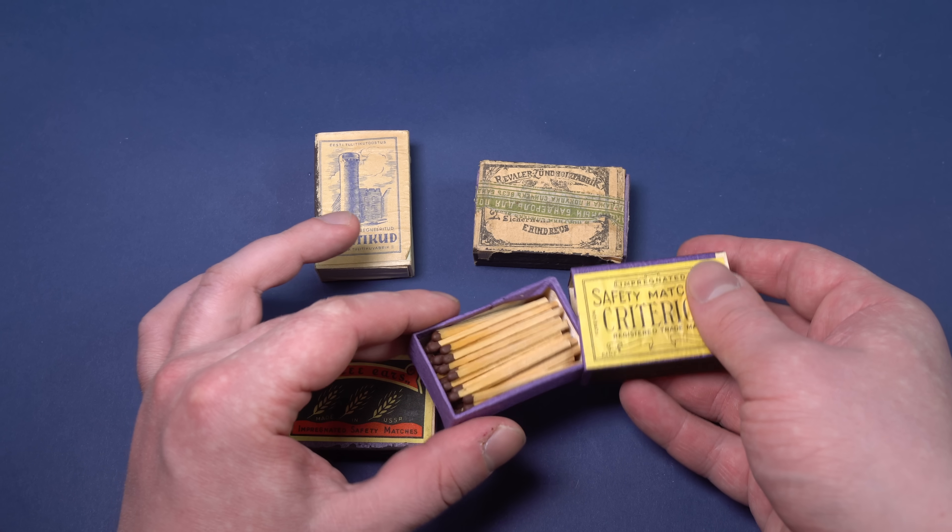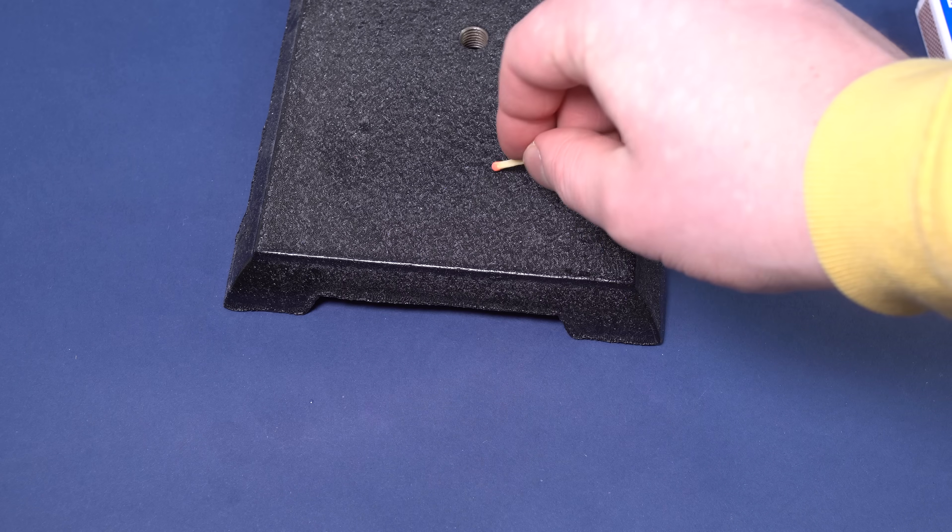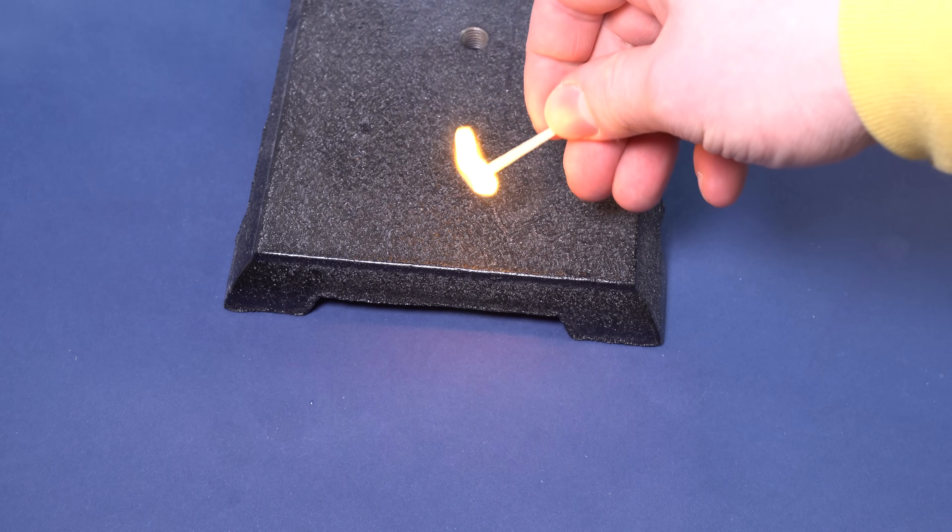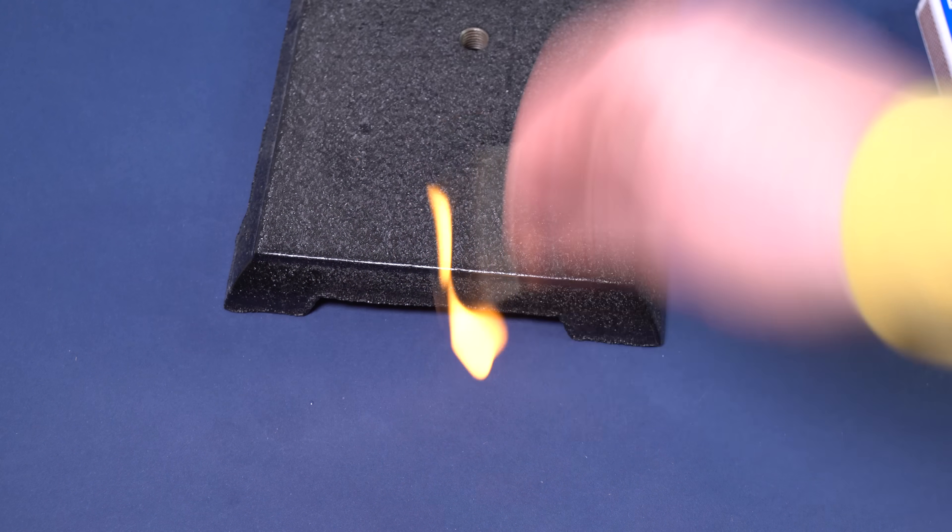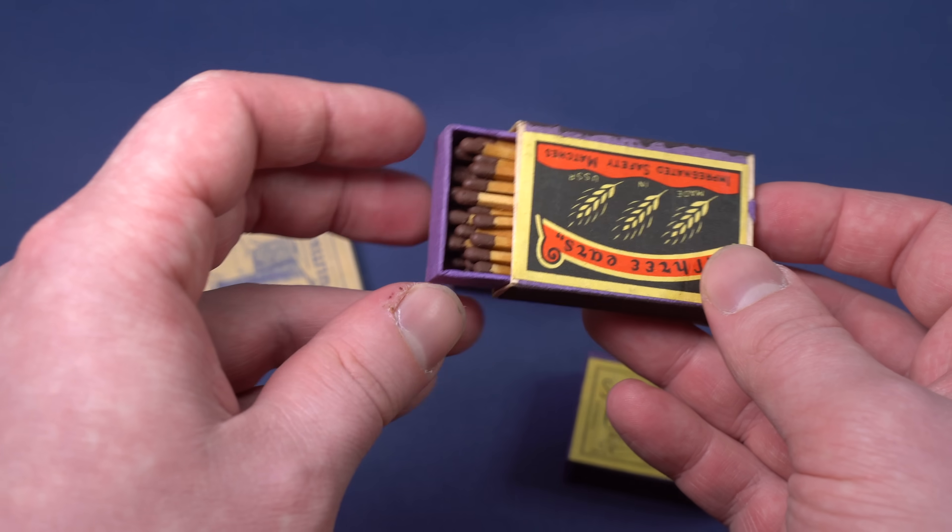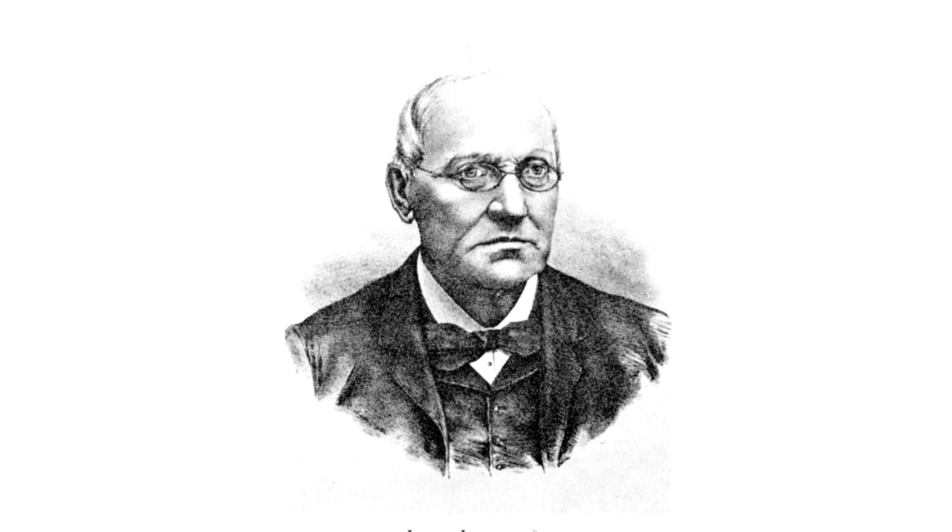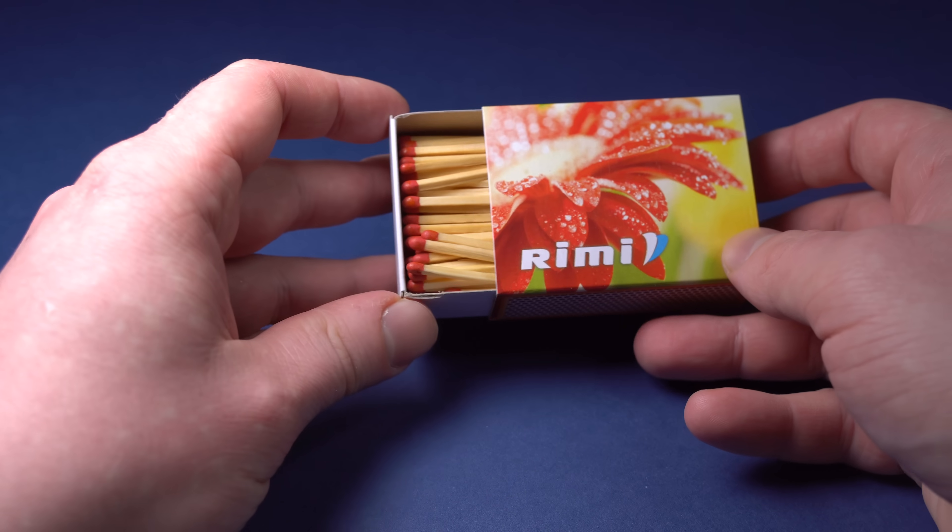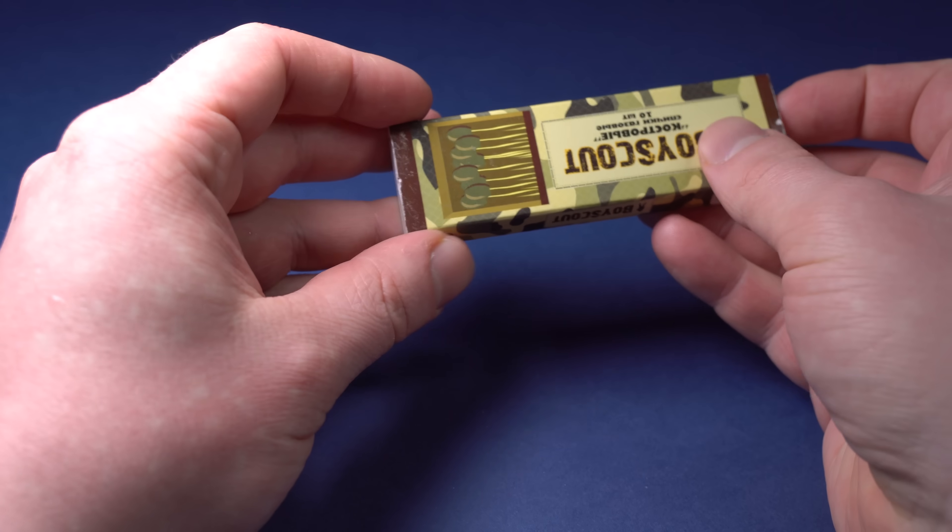In Europe matches began to appear in 19th century and in its early form they were very dangerous because they could light up upon friction against any surface, which was quite dangerous as they could even light up in a box of matches having rubbed against each other. First safe matches appeared in 1855 and they were invented by Swedish chemist John Lundström. Since then they have practically remained unchanged. These Swedish matches are the very ones I am going to make in this video.